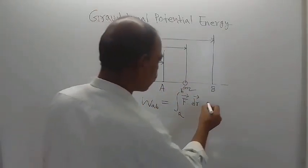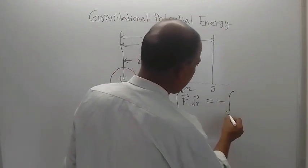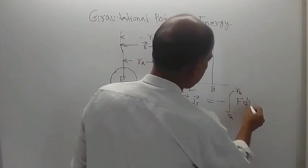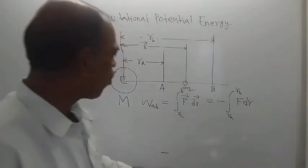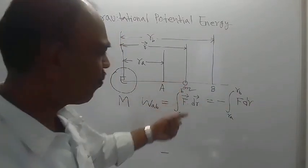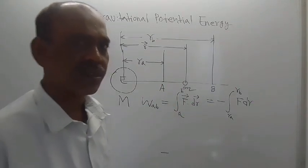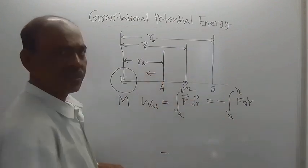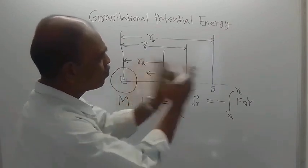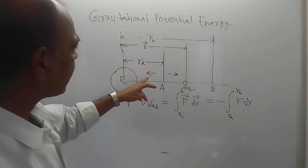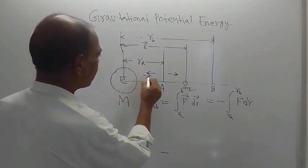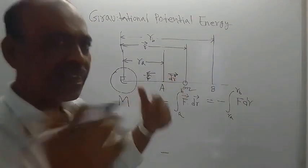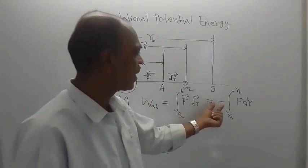The work done, denoted by W_AB, is equal to the integration of F (force) dot dr — where dr is the infinitesimal change in the position vector of the small object, and F is the force vector exerted by planet Earth on the small object. It is integrated from A to B. This is equal to minus the integration from Ra to Rb of f dr. Why does this negative sign appear? Because the direction of F and the direction of dr are opposite to each other.